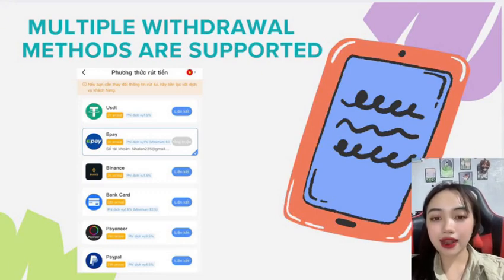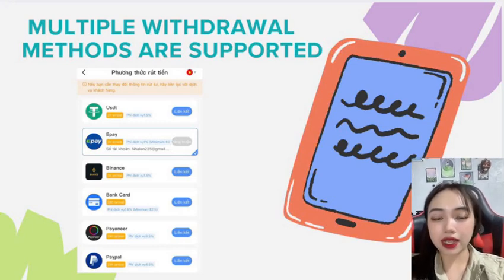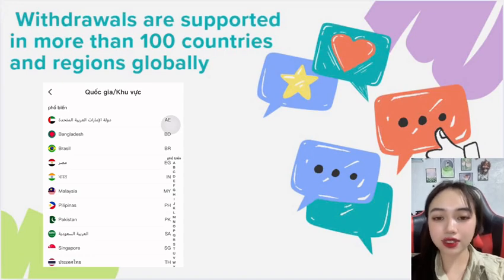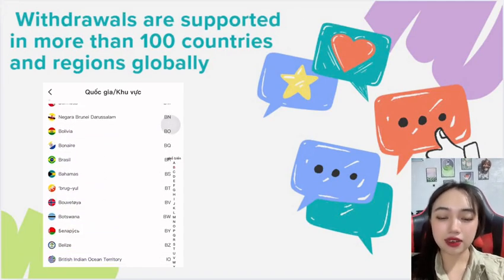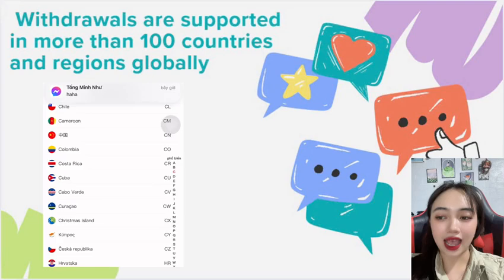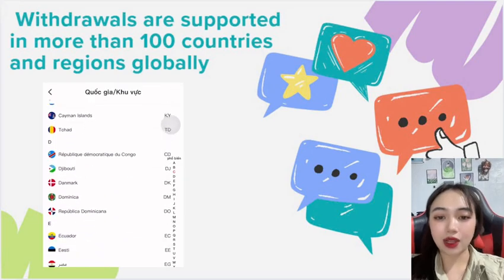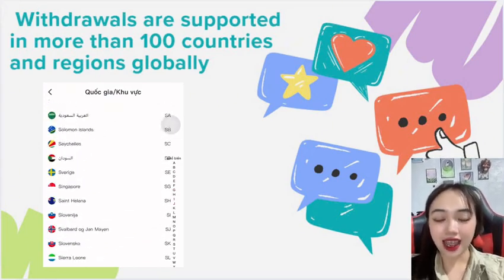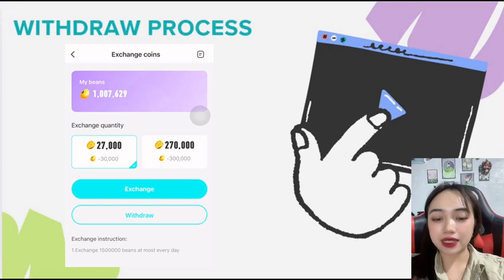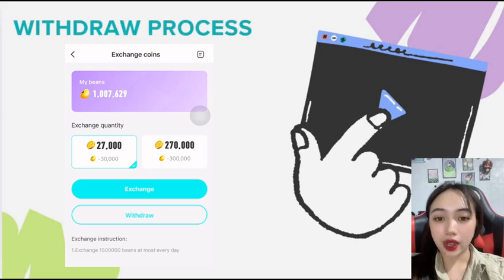Our task is simply to choose the approach to withdraw and fully verify the necessary information. To withdraw money on Nikkei Life, you need to click on the withdraw button in the bin management section.